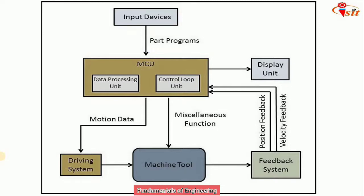The part program is given to the MCU — the Machine Control Unit — which is a computer that stores the part program and converts it into desired commands for the machine tool. The machine tool uses servo motors or stepper motors to execute commands. The MCU consists of two parts: the DPU (Data Processing Unit), which includes control software, analytical software, and translation software, and also interpolation software for achieving multi-directional contoured motion of the tool head or workpiece as smoothly as possible.